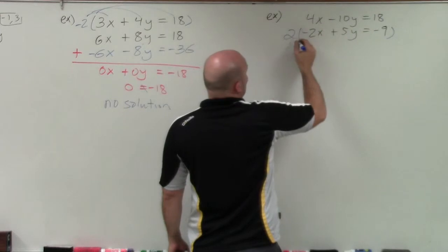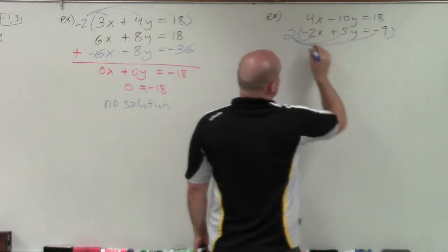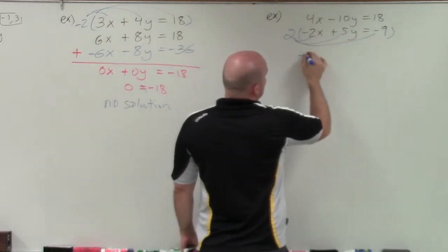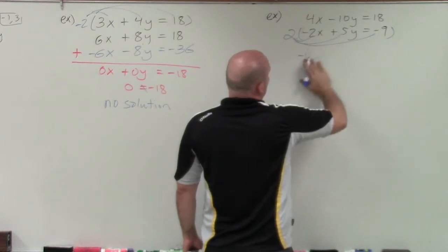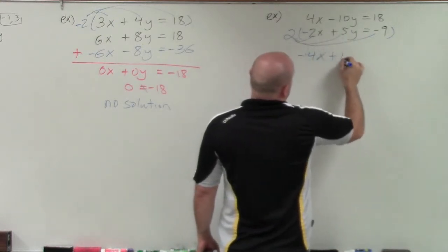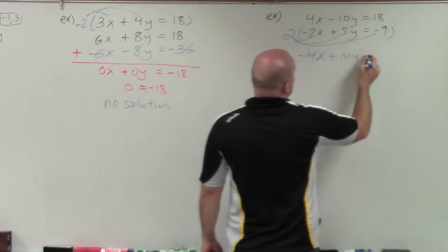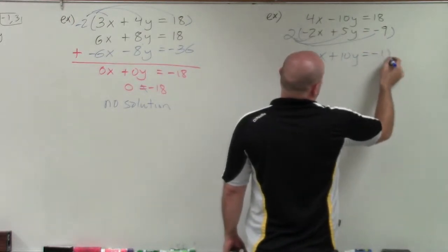So again, I have to apply distributive property. So 2 times negative 2x is negative 4x. 2 times 5 is 10y. And 2 times negative 9 is negative 18.